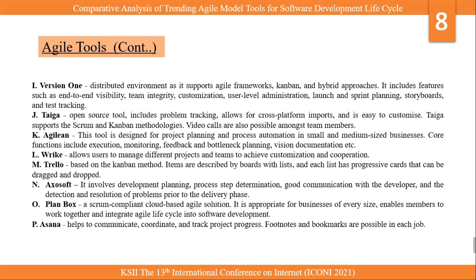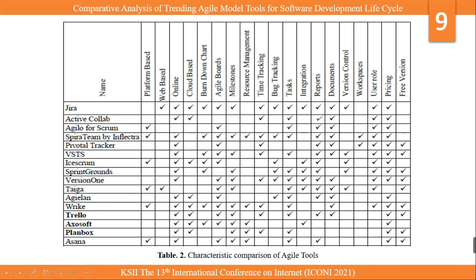This is the comparison chart of the agile tools discussed, based on some characteristics, showing which tools support which characteristics. For example, Jira is web-based, online, and cloud-based; it divides work into tasks and milestones, generates reports, has multiple user roles, and has different pricing schemes. However, it does not have a free version and is not platform-based. Similarly, other tools are evaluated across these characteristics.